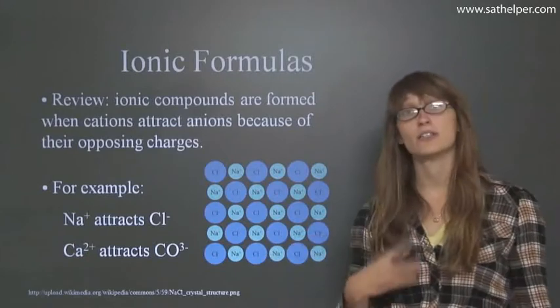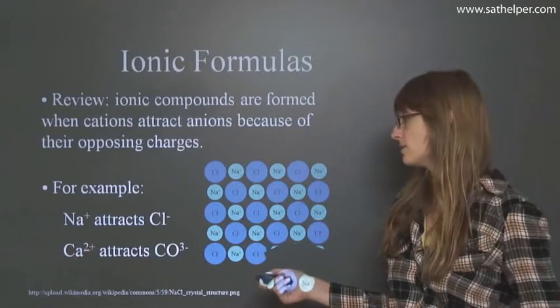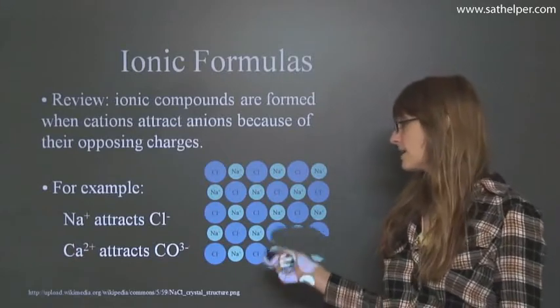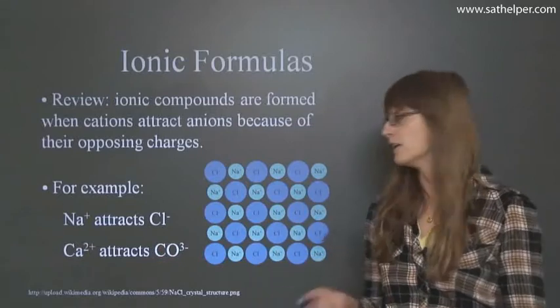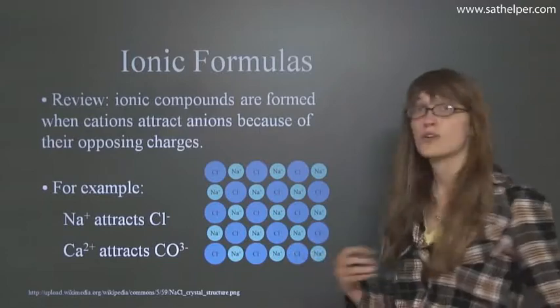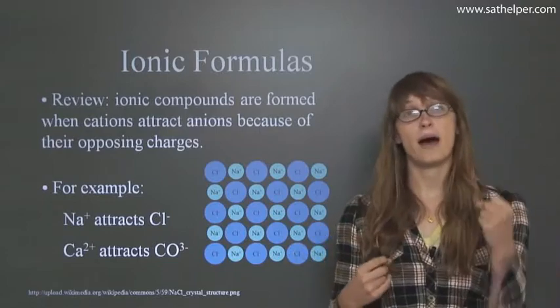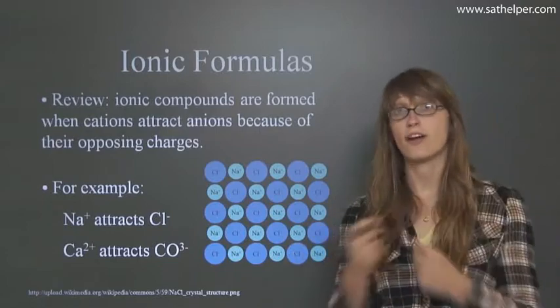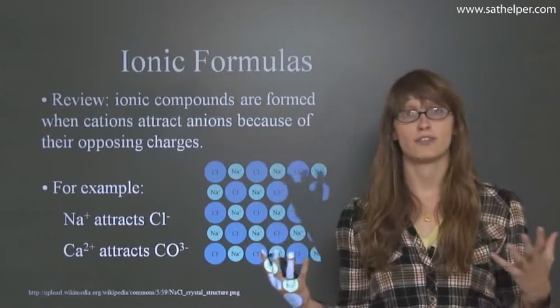Similarly, calcium is going to lose two electrons and become Ca2+. And here's another example of an anion. CO3 is going to have a negative charge of 2-. So basically all you need to know is that positive and negative attract each other. And this is how ionic compounds are formed.